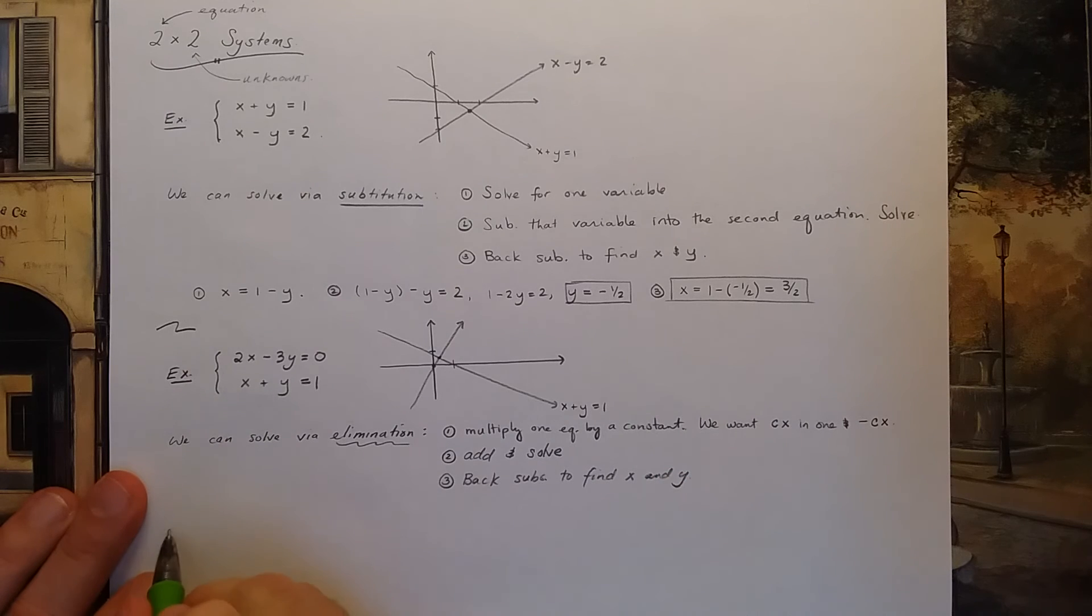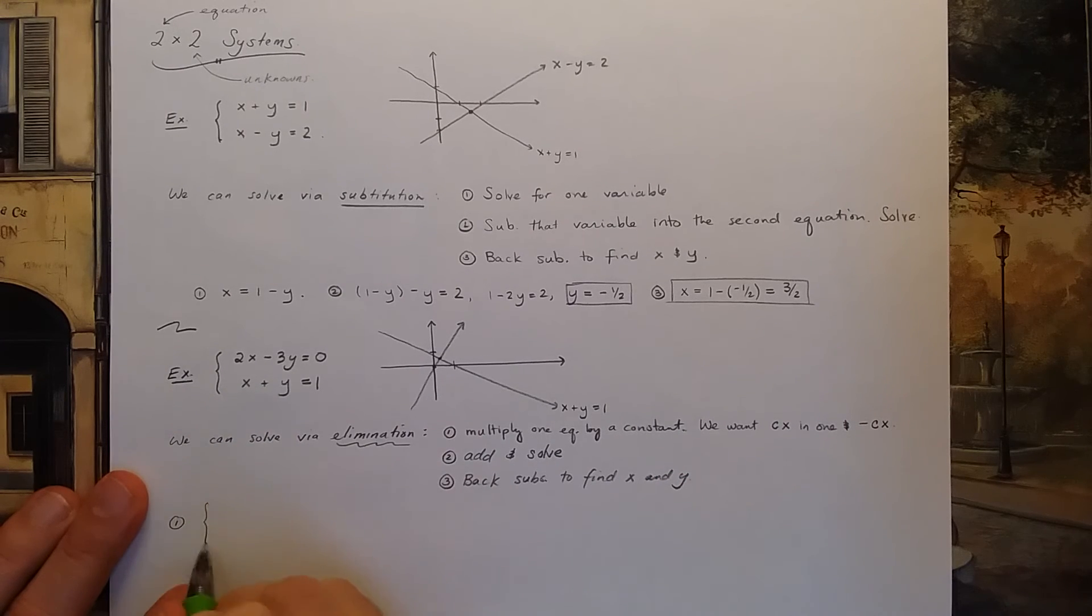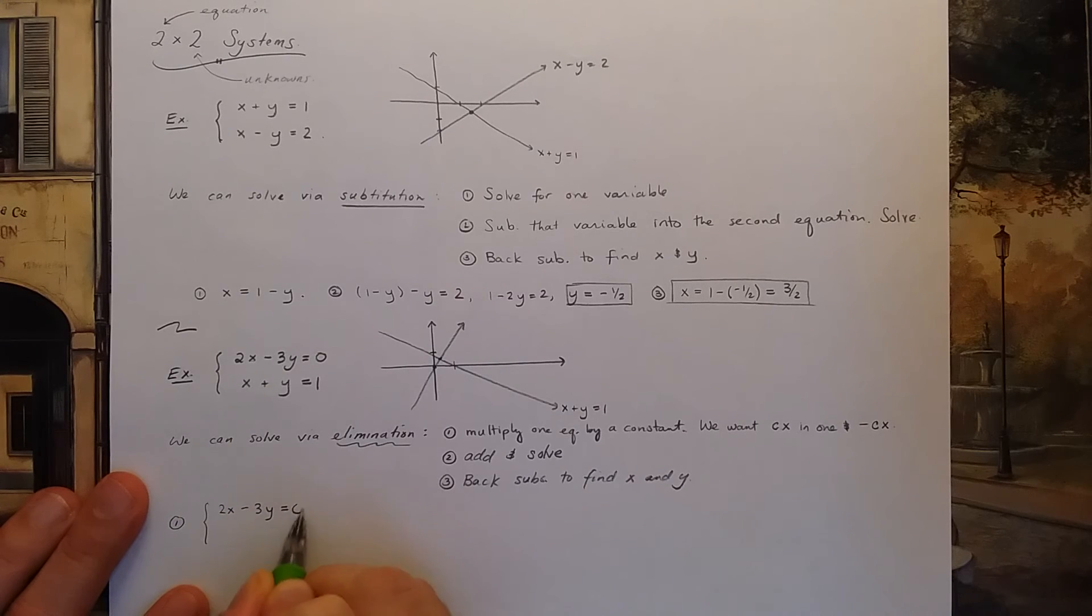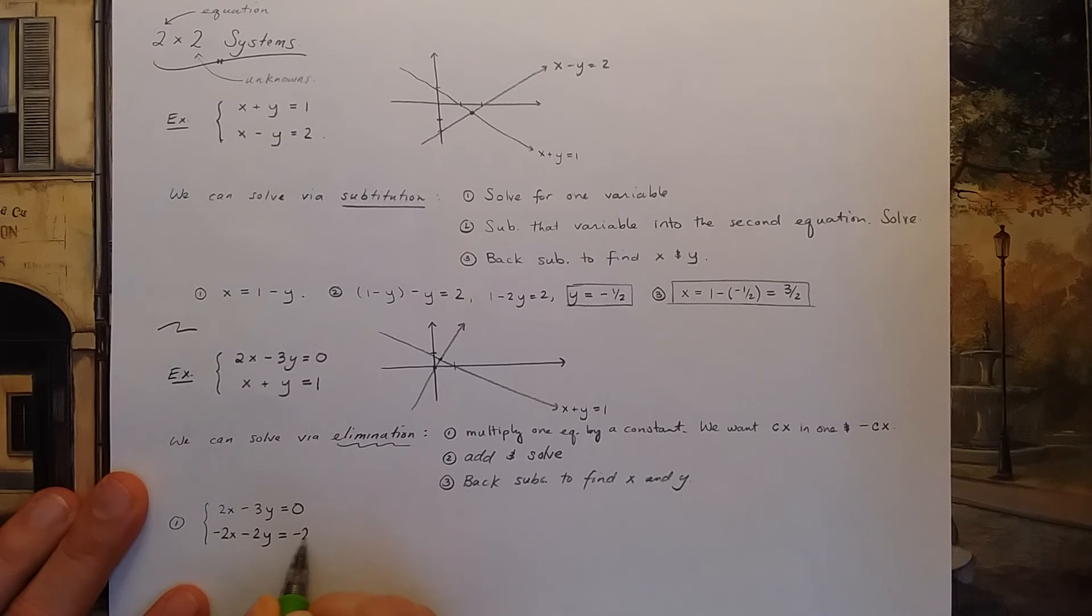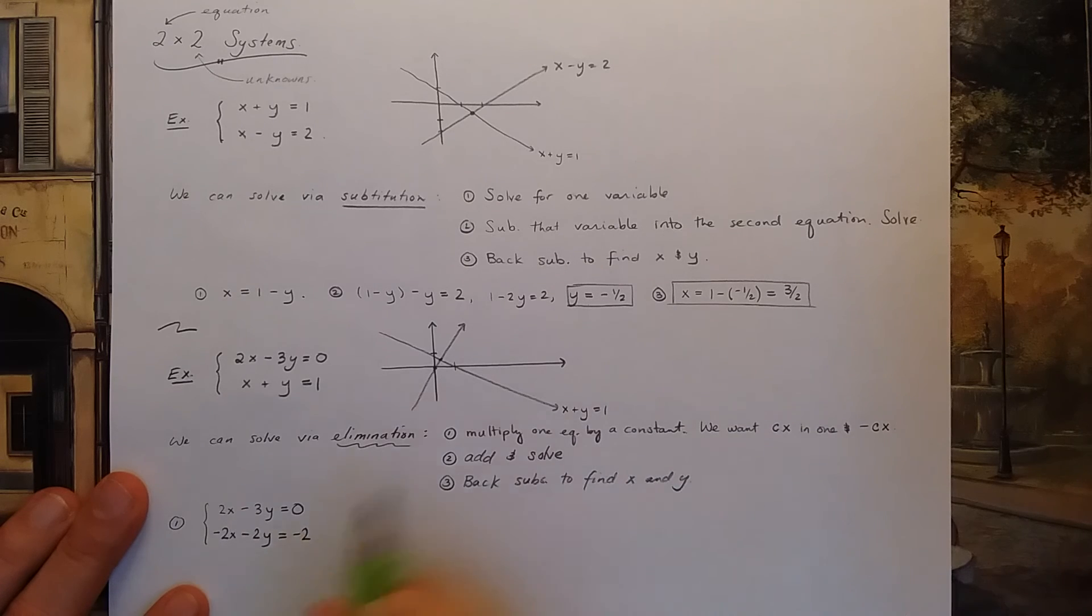Okay, let's follow through these steps to finish the video. Step one is I'm going to multiply the second equation by a constant so that I get cx in the first equation, in that case 2x, and negative cx in the other. So the first equation is going to stay the same. But the second equation is going to be negative 2x minus 2y is negative 2. Notice I multiplied everything by negative 2.